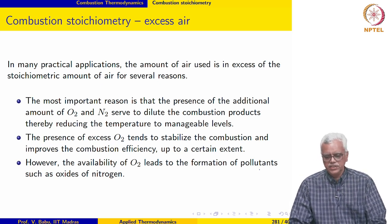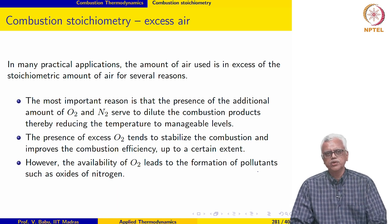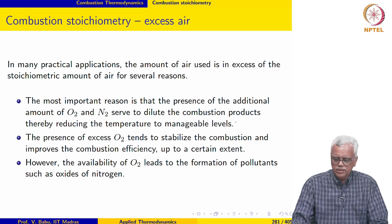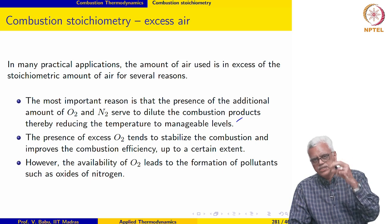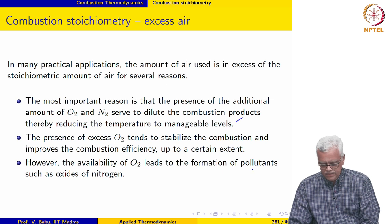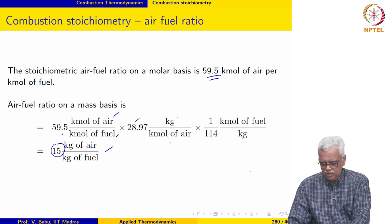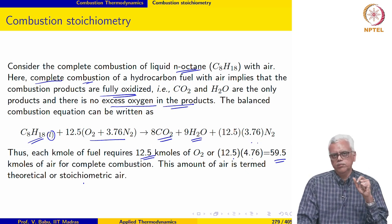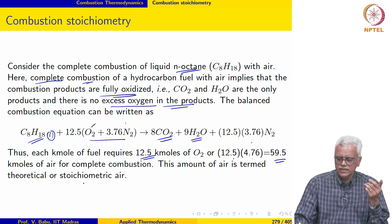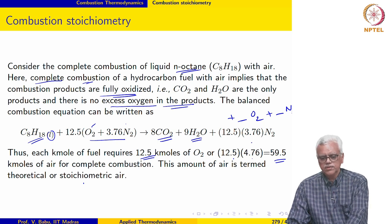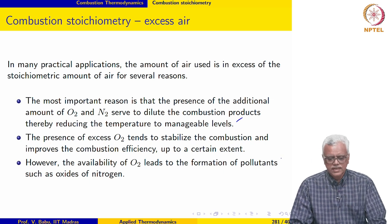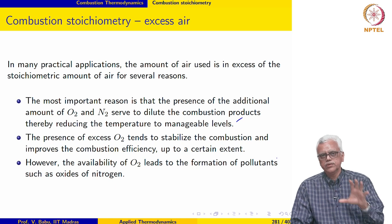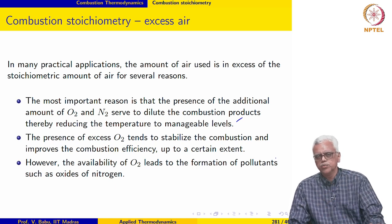In many practical applications, the amount of air used is always in excess of the stoichiometric amount. When we use excess air, there are additional amounts of O2 and N2 on the product side. The presence of these additional quantities serves to dilute the combustion products and results in a reduction in peak temperature, which can be reduced to manageable levels.